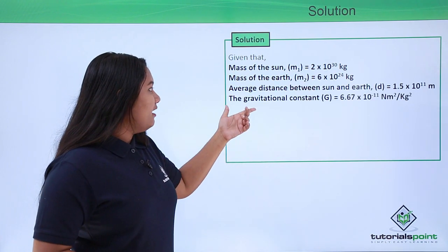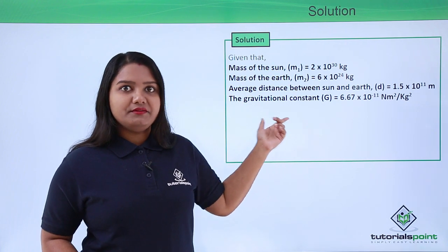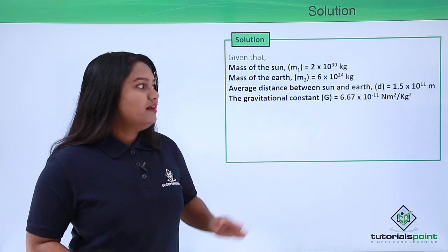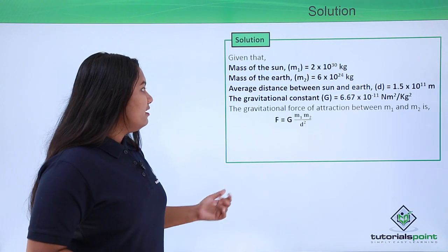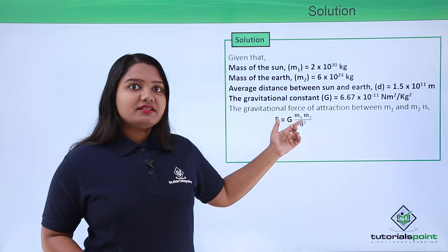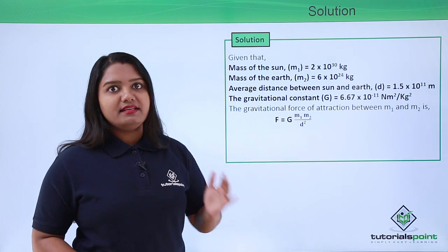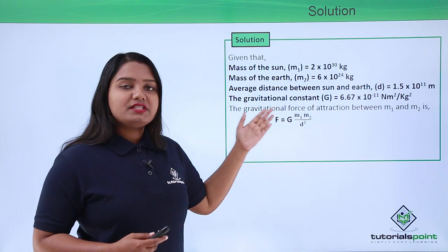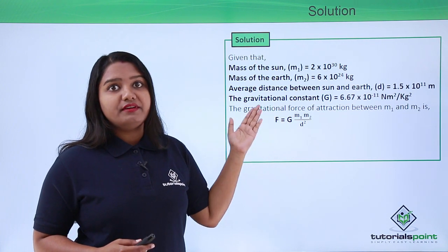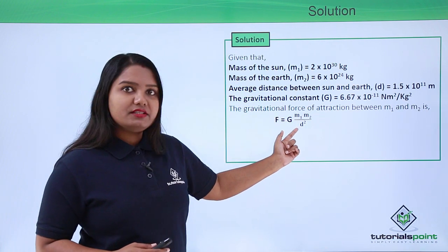Now the gravitational constant is 6.67 × 10^-11 N⋅m²/kg². The gravitational force of attraction between the masses of the Sun and the Earth can be found using this formula from the universal law of gravitation: F = G⋅m₁⋅m₂/d².